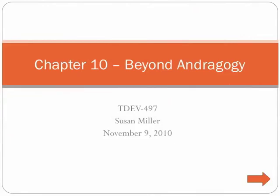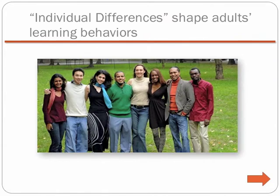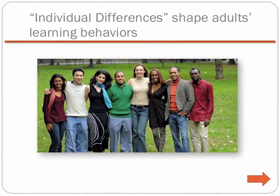In Chapter 10, Beyond Andragogy, we discover that one aspect of the andragogical model that disturbs many people is that not all adults seem to fit the assumptions. Adult learners are not as much alike as the model suggests. There are many individual differences among learners that interact with the core learning principles to shape adults' learning behaviors. Experienced adult learning professionals have learned that, like most models, the andragogical learning principles are tempered by a variety of other factors that affect learning behavior. Knowles reinforced this by saying the andragogical model is a system of elements that can be adopted or adapted in whole or in part. It is not an ideology that must be applied totally and without modification. In fact, an essential feature of andragogy is flexibility.